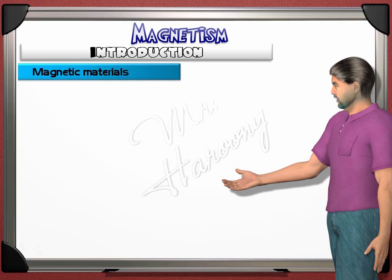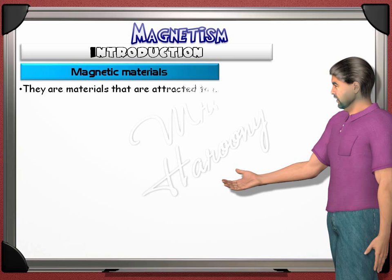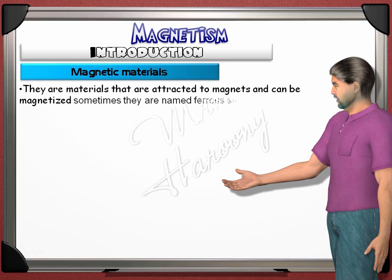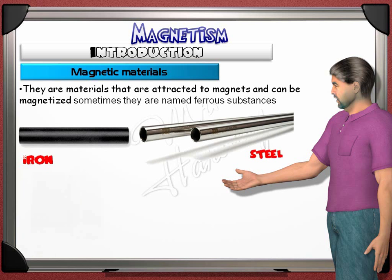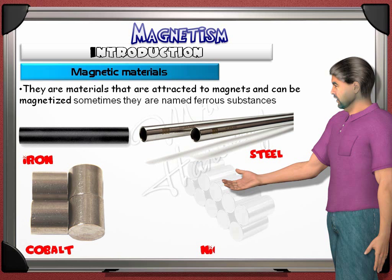Magnetic materials are materials that are attracted to magnets and can be magnetized. Sometimes they are named ferrous substances. They are iron, steel, cobalt, and nickel.